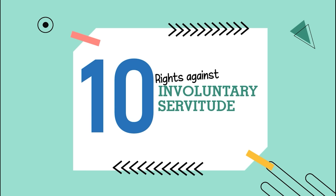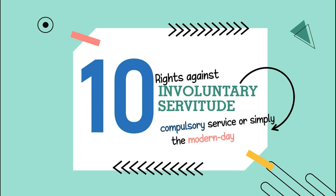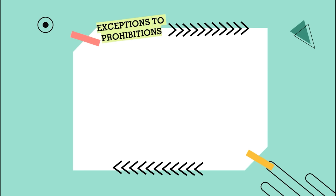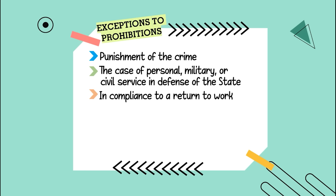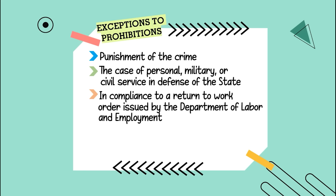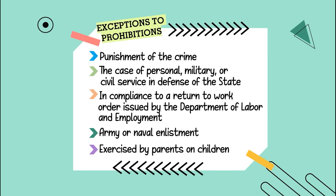Number ten, the right against involuntary servitude. Involuntary servitude refers to compulsory service — simply the modern-day slavery. The new constitution prohibits involuntary servitude. However, there are exceptions: as a punishment for a crime; in the case of personal, military, or civil service in the defense of the state; in compliance with a return-to-work order issued by the Department of Labor and Employment; army or naval enlistment; and if it is exercised by parents and children.